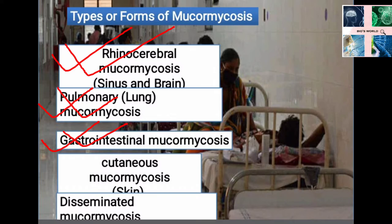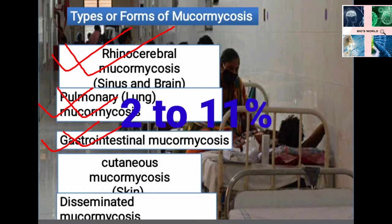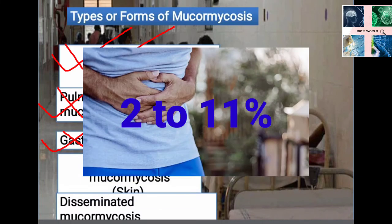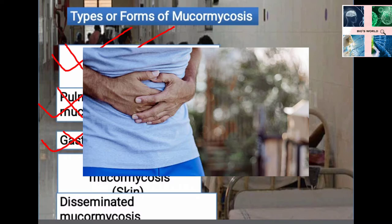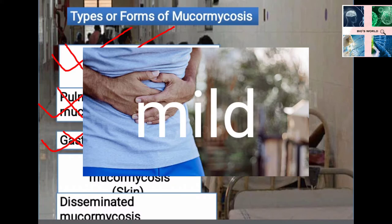The third type is gastrointestinal mucormycosis. It accounts for about 2–11% of total cases. The organs involved are the stomach and intestine, but in some cases the infection can spread to other organs of the intestinal tract. The infections are mostly mild but in some cases can be fatal.